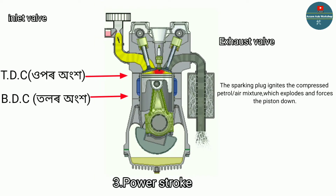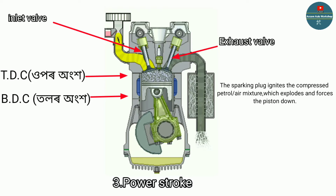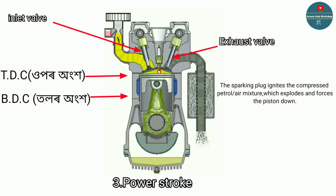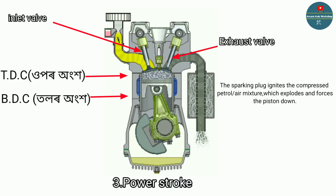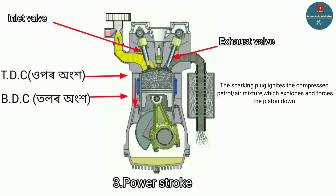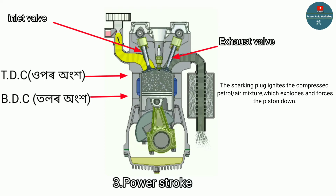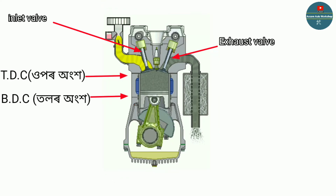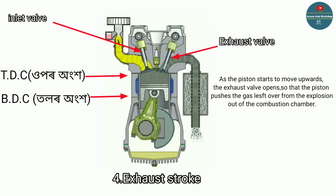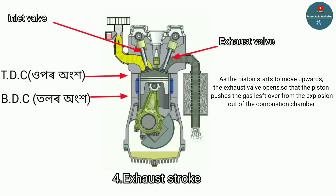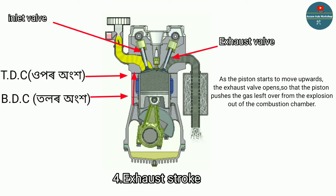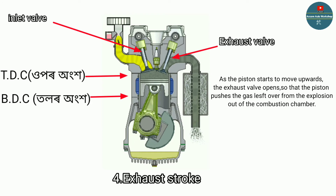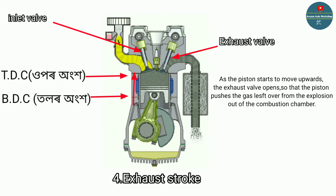The power stroke is very important — the compressed air-fuel mixture ignites and drives the piston down, generating power. The last stroke, number four, is the exhaust stroke. The exhaust valve opens and the burnt gases are expelled from the cylinder through the exhaust valve.